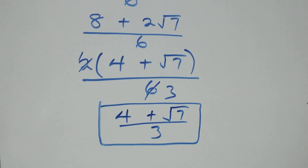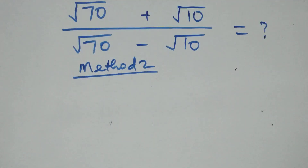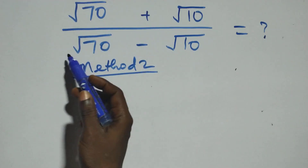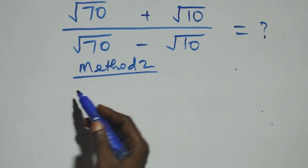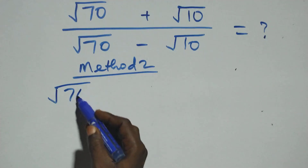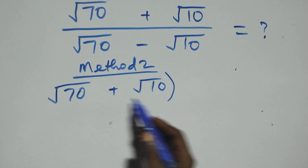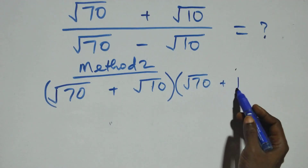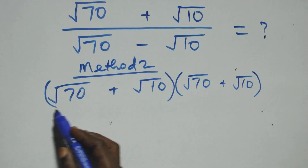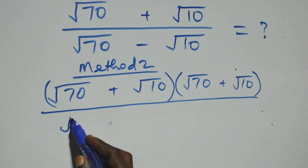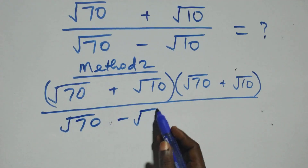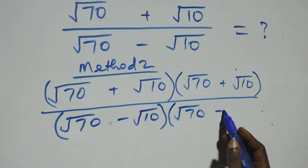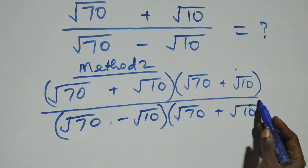Now let's look at the second method. From here, we rationalize this directly. We multiply the numerator and denominator by the conjugate of the denominator, that is (√70 + √10). So we multiply (√70 + √10) by the conjugate of the denominator, which is also (√70 + √10) — watch this video to the end.